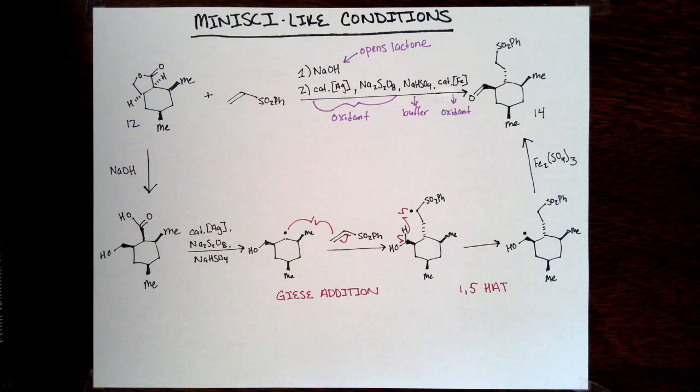The sodium persulfate is what's oxidizing the silver catalyst. They also mentioned that they needed bisulfate in this reaction to buffer their carboxylate to avoid insoluble mixtures. After the silver oxidation, that radical can add into the electron-deficient alkene, and the corresponding radical can do a 1,5 hydrogen atom transfer yielding an alpha-oxy radical intermediate. This intermediate can be oxidized to the corresponding aldehyde with their iron oxidant.